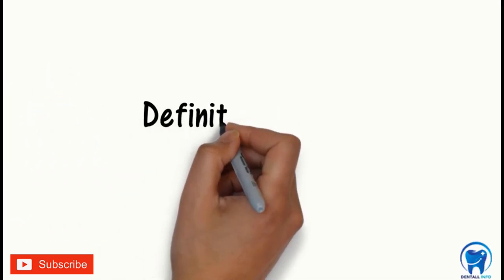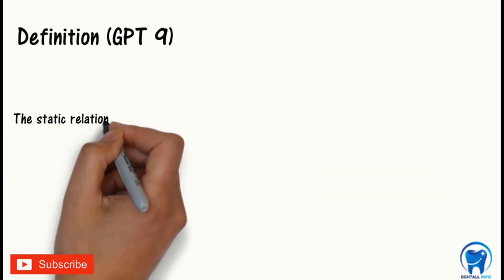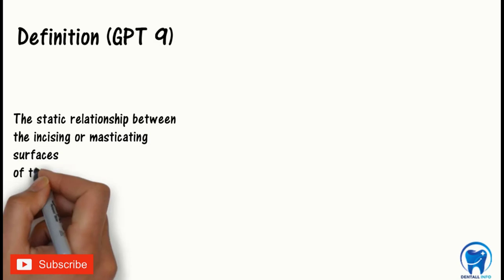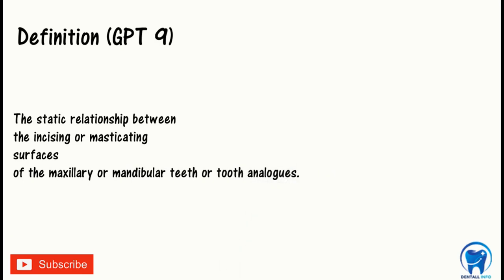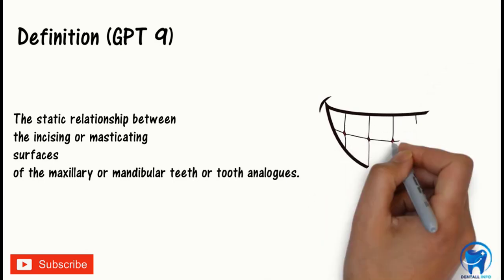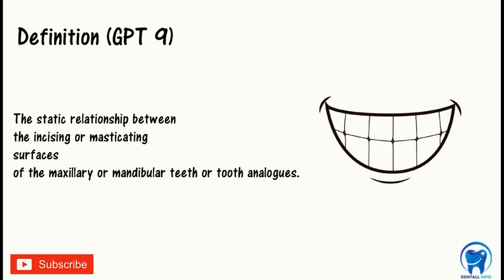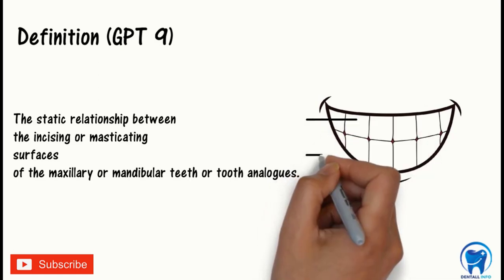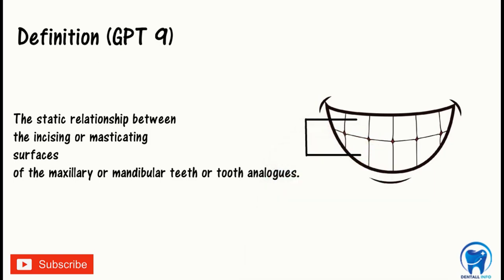Now let's start with the definition of occlusion according to GPT-9. It is defined as the static relationship between the incising or masticating surfaces of the maxillary or mandibular teeth or tooth analogs. This diagram will help us understand the definition of occlusion. These are the maxillary teeth and these are the mandibular teeth. The static relationship between these two is what is known as occlusion.